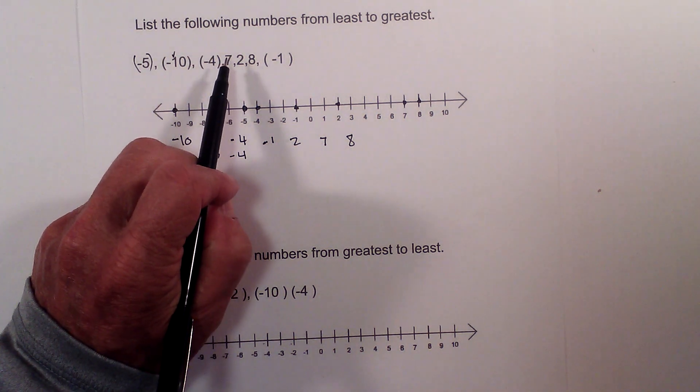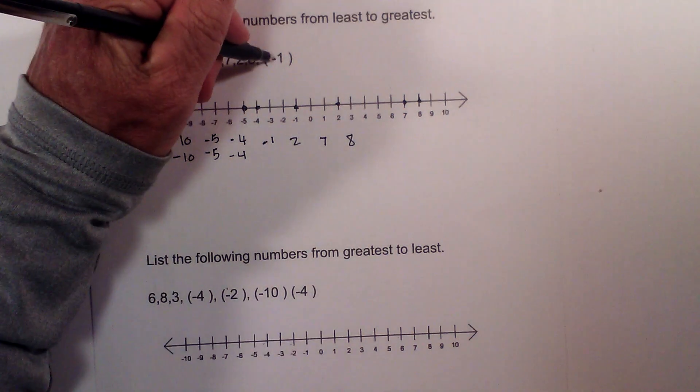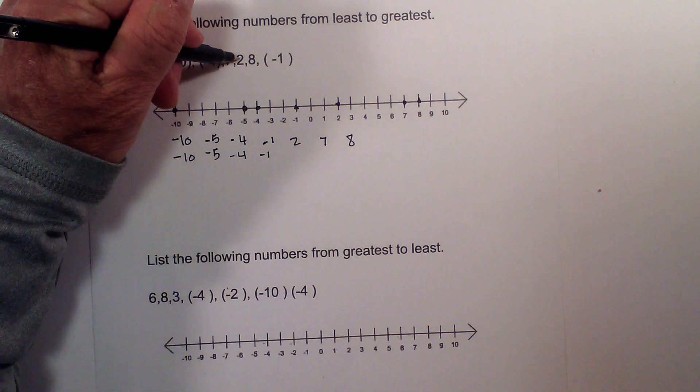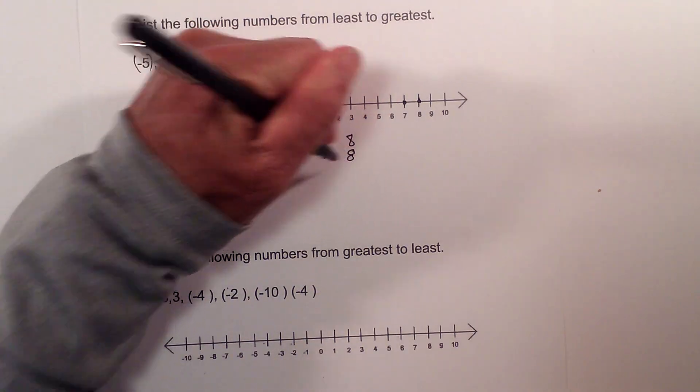Now we need to find the smallest since we are going to least. So I will go with the... oops, I left off the negative 1. Then I go to the 2, the 7, and then the 8.